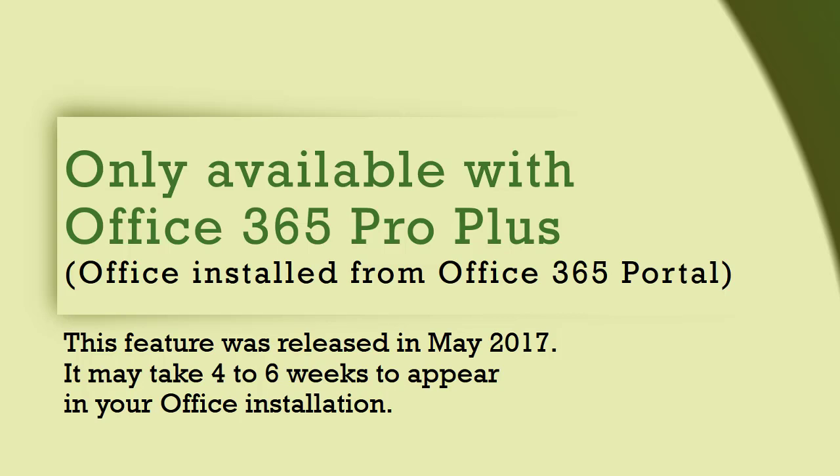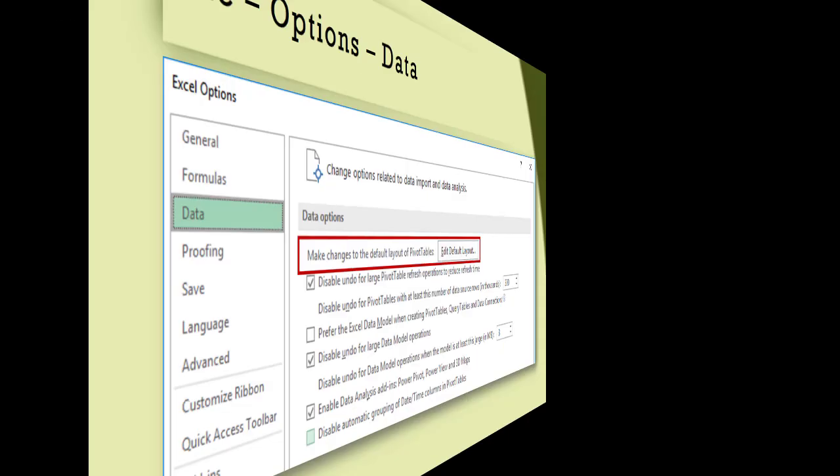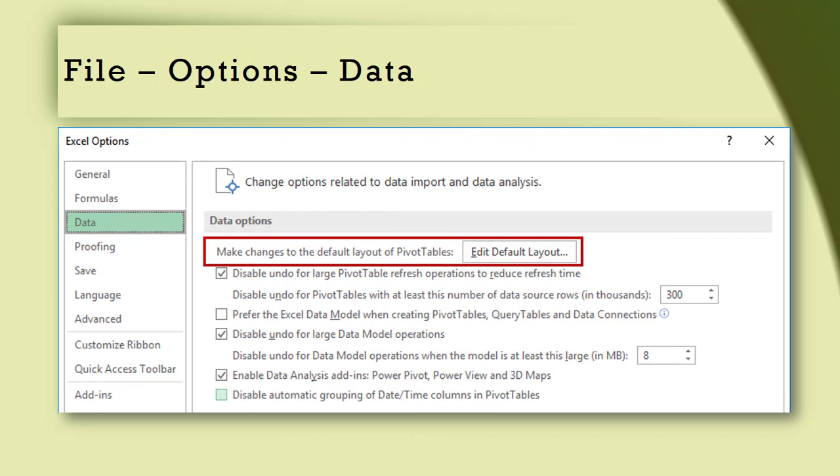Enabling or using this feature is quite simple. You go to File > Options > Data and you will see a button called Edit Default Layout.